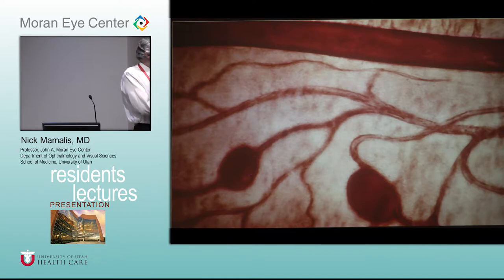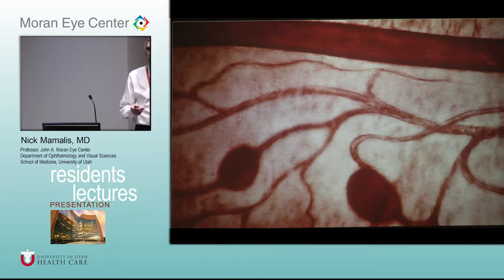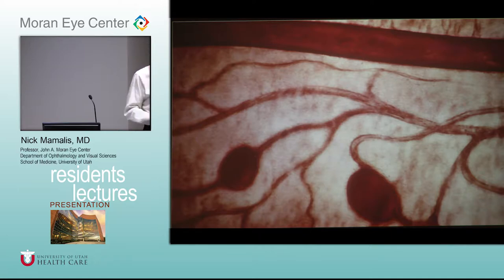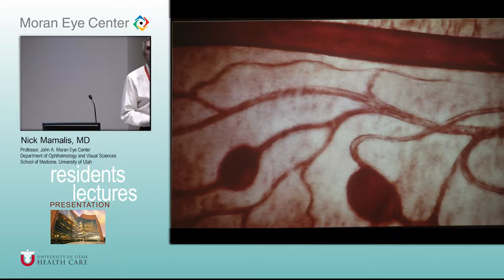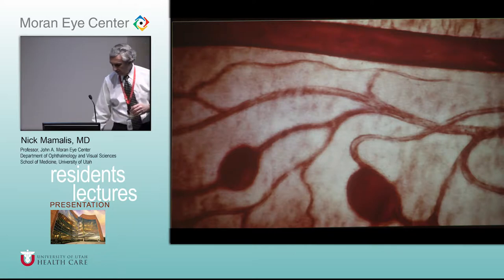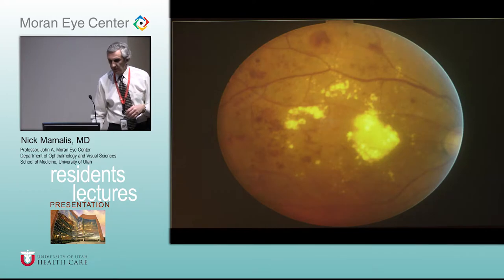With the trypsin digest technique you can take a piece of retina, digest the surrounding tissue, and leave the vessels behind. The first finding of diabetes is microaneurysms — you start to have pericytes drop out, vascular walls get weakened, you get microaneurysms. Eventually these can leak.